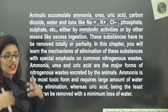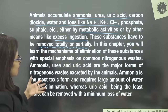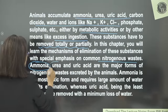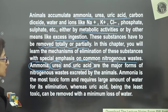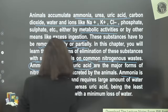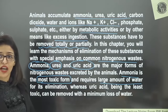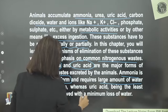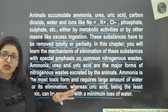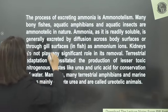These need to be removed totally or partially. We have mechanisms for elimination, especially of common nitrogenous waste: ammonia, urea, and uric acid — the major nitrogenous waste in animals. Ammonia is the most toxic form and requires a large amount of water for elimination. Uric acid is the least toxic and can be removed with minimum water loss. Urea is in the moderate range. Excretion of ammonia is known as ammonotelism. Ammonotelic organisms include bony fishes, aquatic amphibians, and aquatic insects.